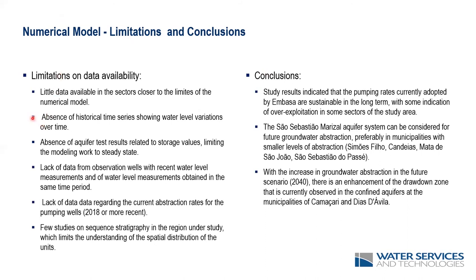One of the main limitations is the absence of a consistent series of water level readings over time. Most of the information we have are point readings for specific purposes, separated over time. In compiling hydraulic heads for model calibration, we tried to get readings from the closest periods possible — within a few years and during the same season. Some of these limitations will be addressed in a second phase of the study to be carried out in 2021.